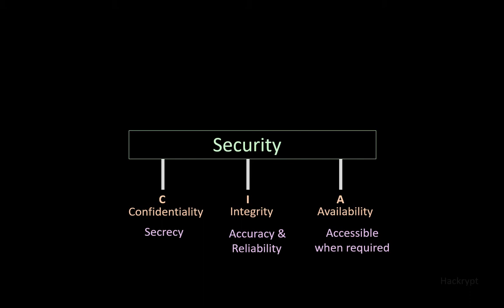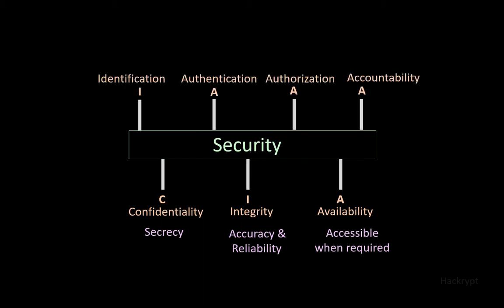Apart from these, we have other supporting fundamental principles called IAAA: identification, authentication, authorization, and accountability. Identification provides a unique identity of a user. Authentication acts as proof of that identity. Authorization assigns the permissions, and accountability creates a liability.